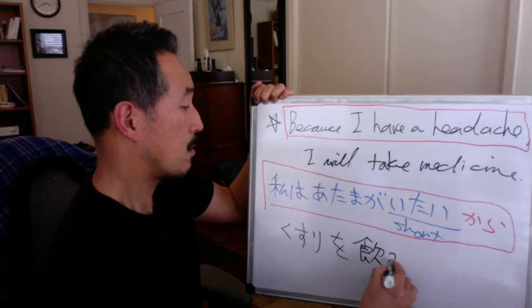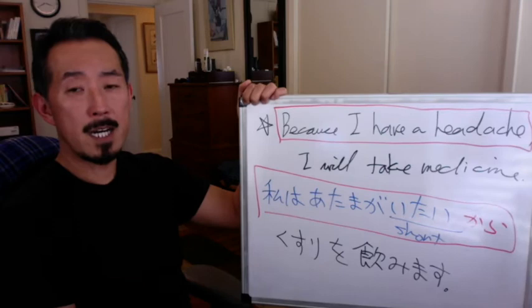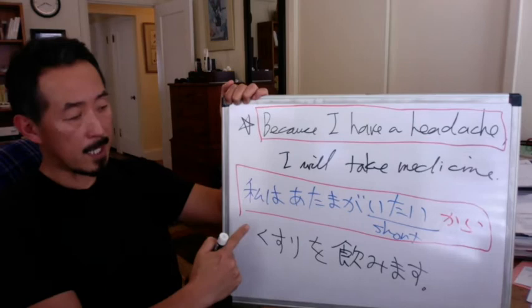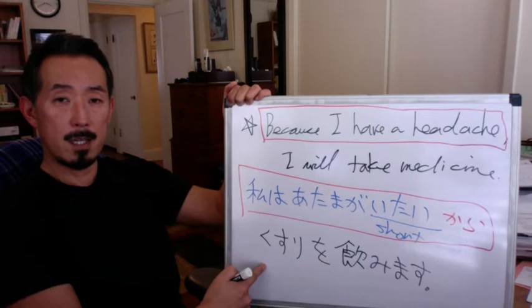薬を飲みます. 私は頭が痛いから — because I have a headache — 薬を飲みます — I will take medicine. That's today's new sentence structure.